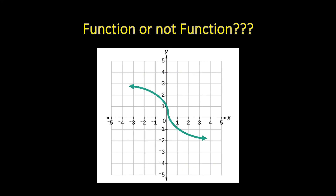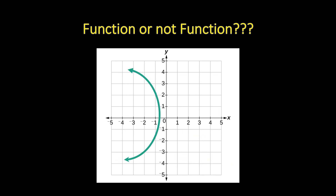The next example: if you try to draw a vertical line anywhere on the graph, you would not see two points intersected — only one point — so this is a function. Next, this one is really obvious: if you draw a vertical line here, you would have two points intersected with the vertical line and the graph, so this is not a function.